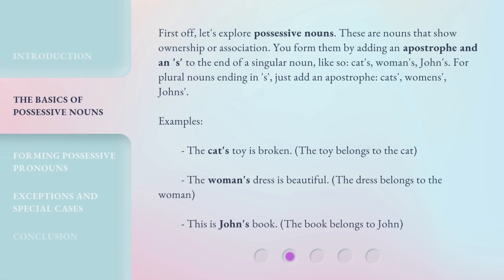First off, let's explore possessive nouns. These are nouns that show ownership or association. You form them by adding an apostrophe and an S to the end of a singular noun, like so: cat's, woman's, John's.